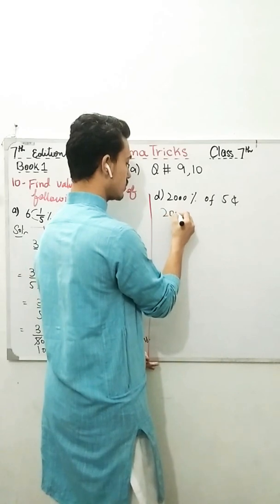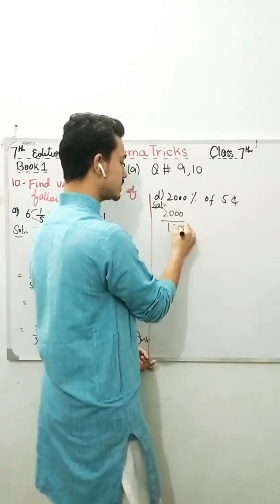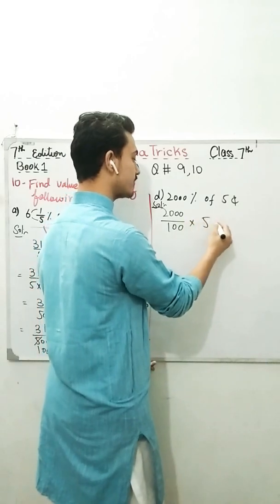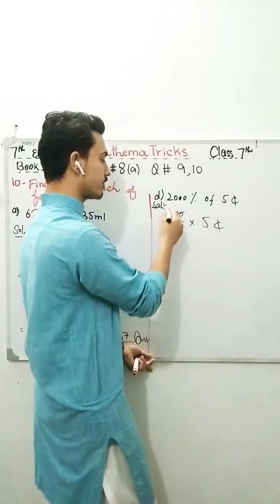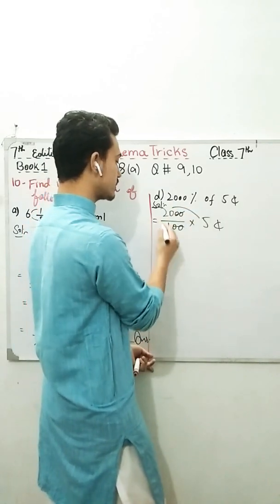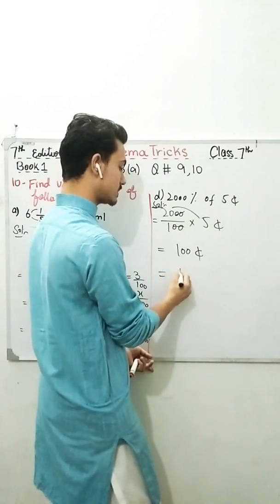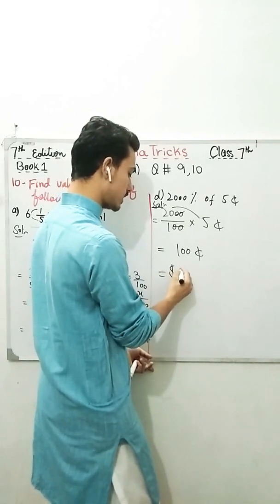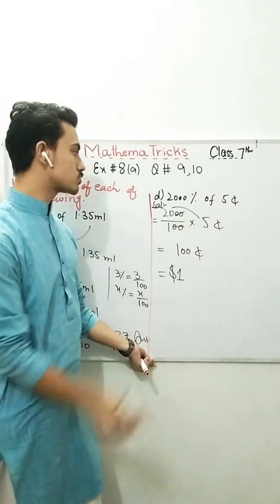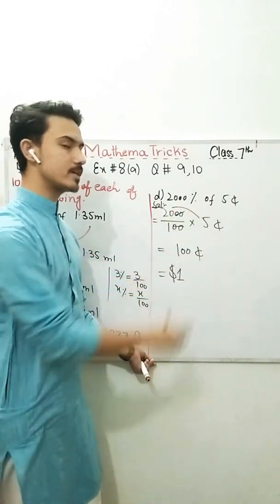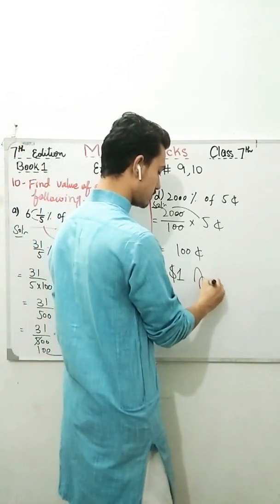2,000 percent means 2,000 over 100, of 5 cents. 2 zeros will be cancelled with 2 zeros. What I have left? 20 into 5. 100 cents. But you can say that it's 1 dollar. As we know, 100 cents equals to 1 dollar. So 2,000 percent of 5 cents is equal to 1 dollar. That's my answer.